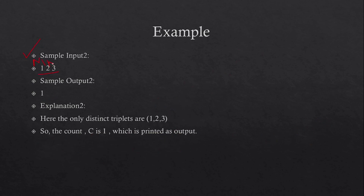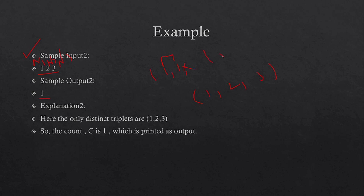In the second example, n1=1, n2=2, n3=3, and the output is 1. Since n1 is 1, the only possible value for the first shoe is 1. For n2 the possible sizes are 1 and 2, but you cannot pick 1 again because that would create a duplicate size.